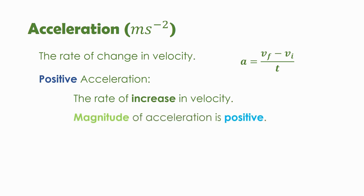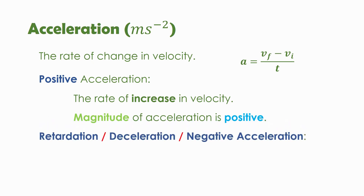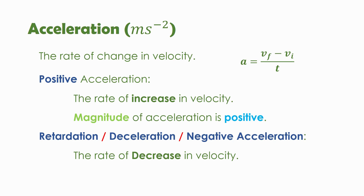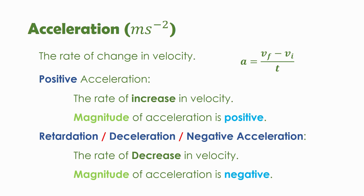There is another term called retardation, deceleration, or negative acceleration — all names for the same concept. Whenever the rate of velocity decreases, that is called retardation. When dealing with retardation or deceleration, the magnitude of acceleration will always be negative. Whether calculating positive acceleration or retardation, we use the same equation: a = (v_f - v_i) / t.